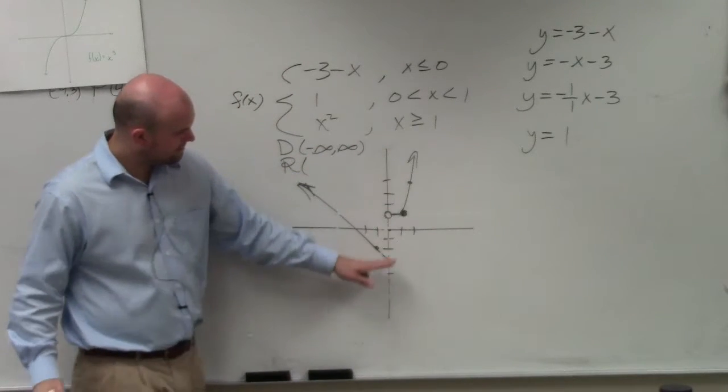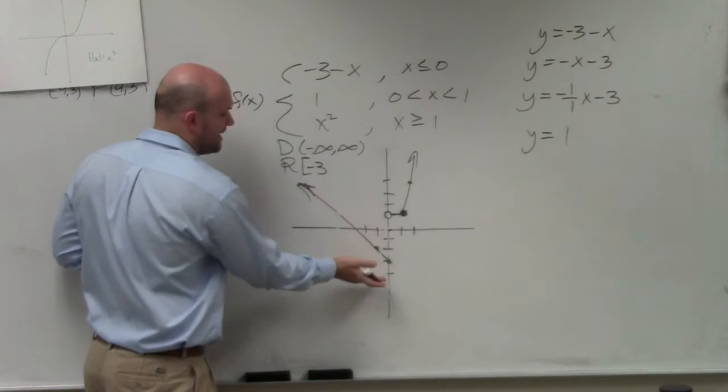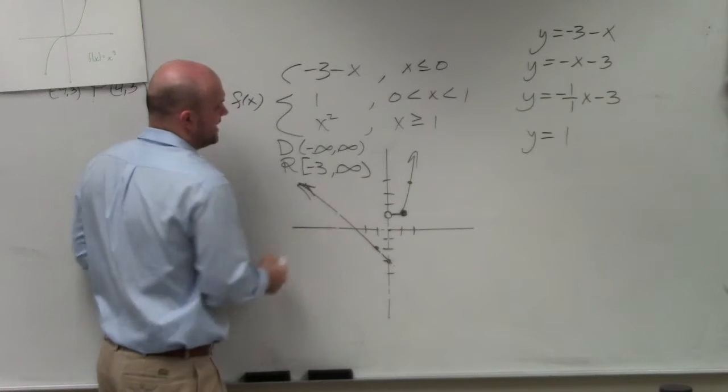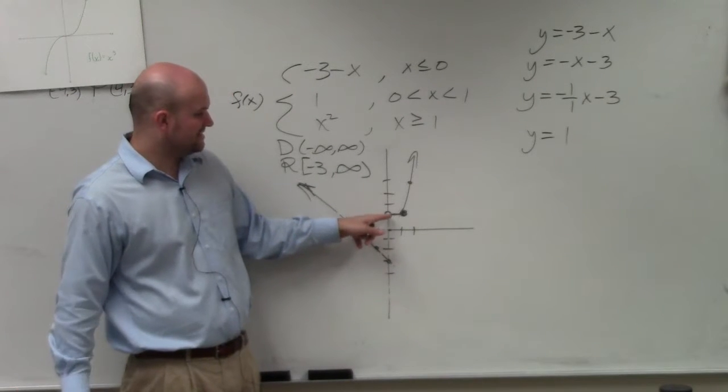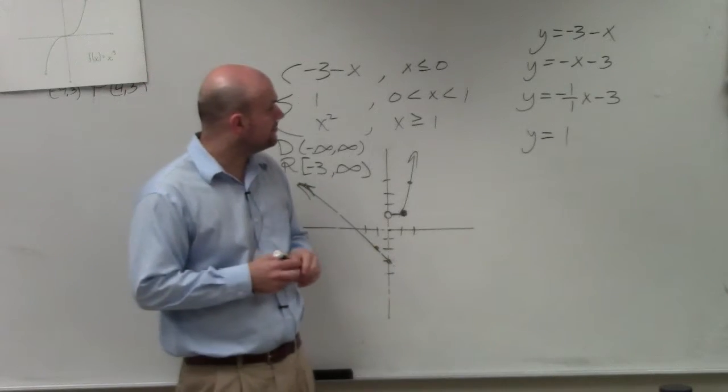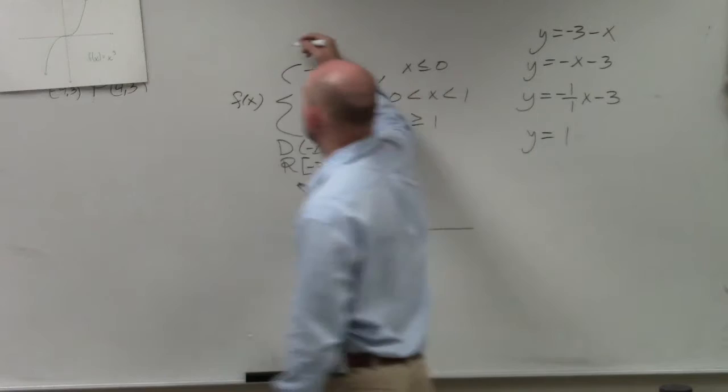The range, how low does this graph go? Negative 3, which is included. And then how high does it go? Infinity. And you could say, well, there's a hole here. But yes, there's also values where it's equal to, right? The last thing I just want to mention to you real quick is, let's go back to our summer assignment.